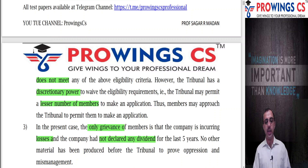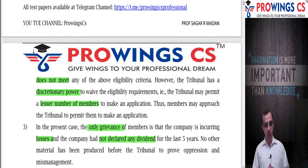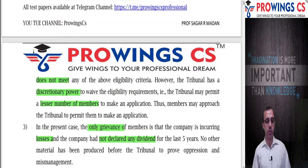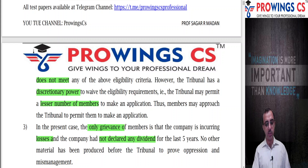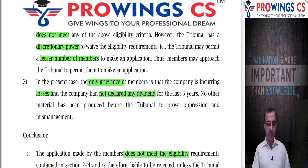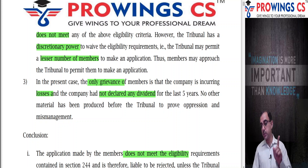However, it did not meet the eligibility criteria. We can say that the tribunal has the discretionary power to waive off certain eligibility requirements. The tribunal may permit even a lesser number of members, so the members may approach the tribunal to permit them to make an application. But we note that the company is incurring losses and has not declared a dividend for the last five years.